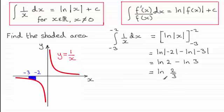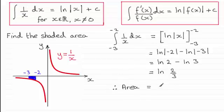Although this value looks positive, it is in fact a negative number, because if you take the log of any number less than 1, it's negative. We would expect that because the area we're looking at is below the x-axis, so we always get negative values. We need to negate that to get the area. Therefore, the area is equal to minus the natural log of 2 thirds, which gives a positive value.